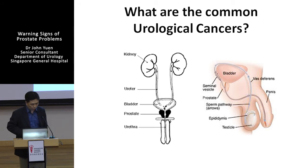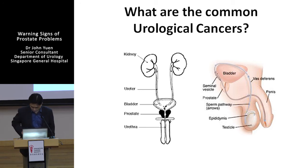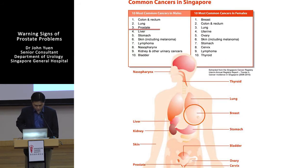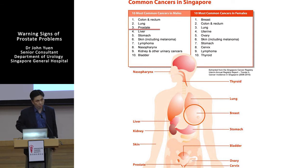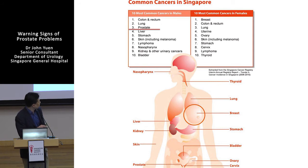When we talk about urological cancer, we talk about not only prostate cancer, which we are going to emphasise here, but also kidney cancer, cancer of the urine passage, the bladder, and occasionally cancer of the penis and cancer of the testis. Prostate cancer is the third commonest cancer affecting men in Singapore. In Western countries it's the commonest. In Asian countries it's slightly less common, but still very, very common.